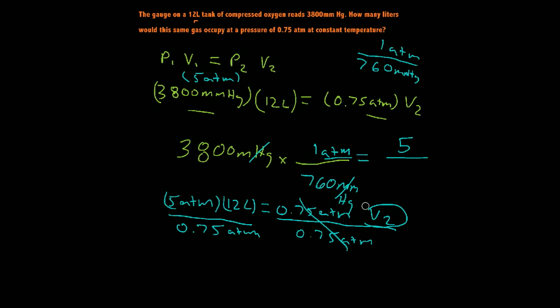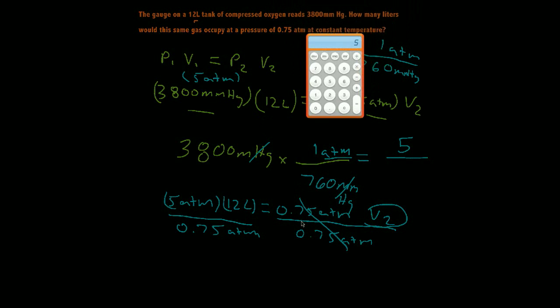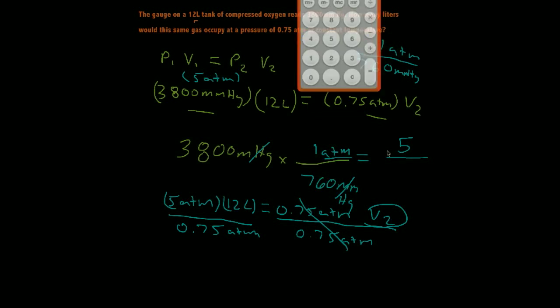So let's just plug that in here. Grab my calculator. 5 times 12 equals divided by 0.75. And that equals 80.